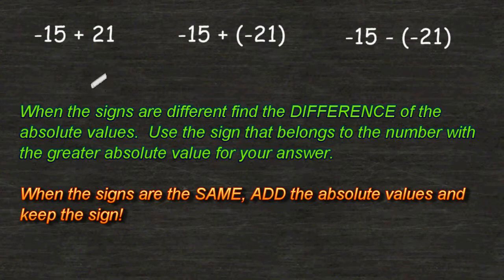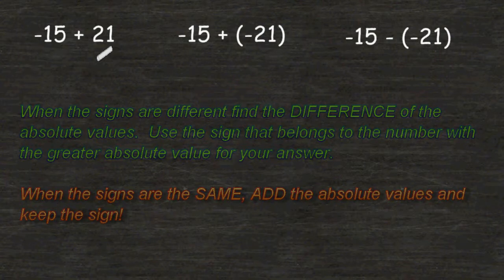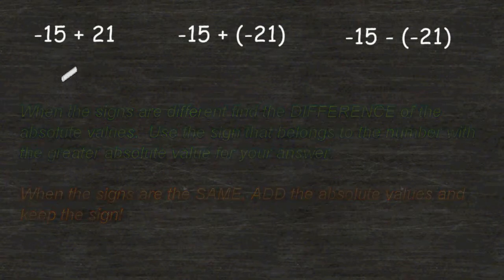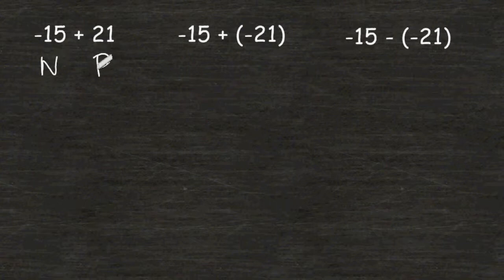So let's take a look at the first example, which is negative 15 plus 21. We can see that the first value is negative and the second value is positive. Because the signs are different, we have to find the difference of their absolute values.